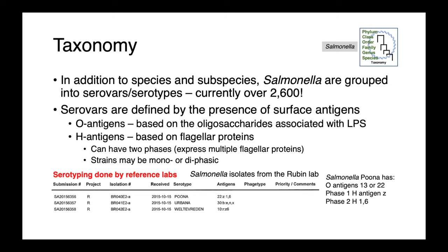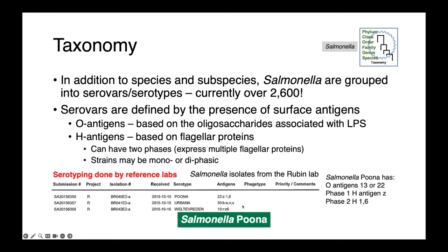Serotyping is done at reference labs, not a routine diagnostic for commercial fee-for-service labs. In our lab, we've done research leading to identification of salmonella from retail food products. Here we have three different strains isolated from retail meats: a salmonella puna, an urbana, and a weltaverdin. The salmonella puna had the 22nd O antigen. The flagellar antigens are biphasic — they can express two different flagellar proteins, which is useful for immune evasion. Our particular strain had the phase 1 antigen of Z and the phase 2 antigen of 1,6.